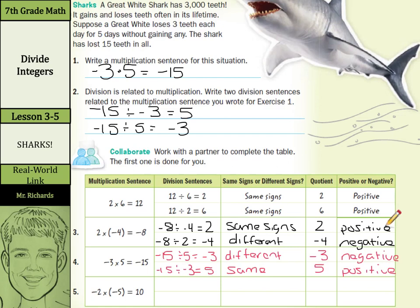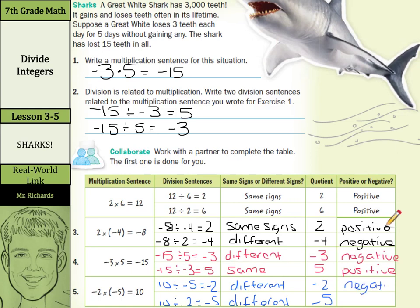Let's finish up the table. Negative 2 times negative 5 equaled 10. So we'll have 10 divided by negative 5 equaling negative 2, and then 10 divided by negative 2 equaling negative 5. Well, in both of these we have different signs — the 10 is positive and the 5 is negative, and the 10 is positive and the 2 is negative. Our quotients were negative 2 and negative 5, so both our quotients were negative.